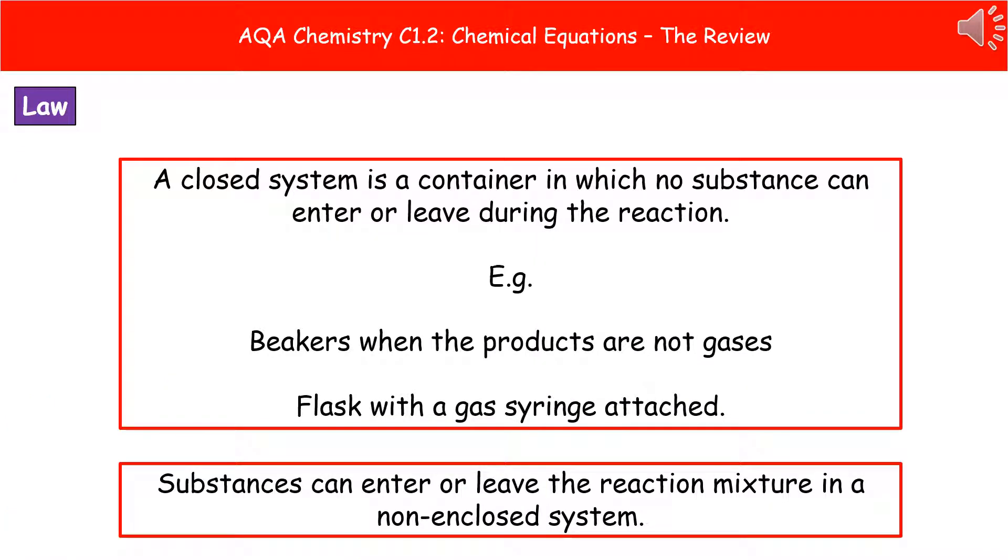When we're thinking about how we can actually investigate things like the law of conservation of mass, we need to think about where we're carrying out reactions. One of the ways we do this is using what's called a closed system. That quite simply is a container in which no substance can either enter or leave during the reaction. So it'd be the beakers I showed you there because none of the products were gases, so they don't get lost. Or if we are making a gas, we'd have to have a flask with a gas syringe attached. So everything is still contained within those objects. If we were to have something where the substances could enter and leave during the actual reaction, then we have a non enclosed system.